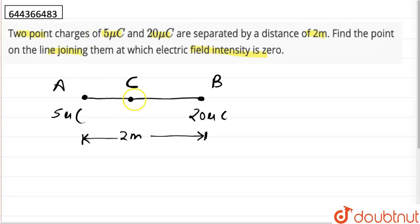Now the electric field intensity due to the charge at A which is 5 micro coulomb would be along this line, radially outwards. Let us name this as EA and the electric field intensity at C due to charge B would be along this line, radially outwards, and this as EB.